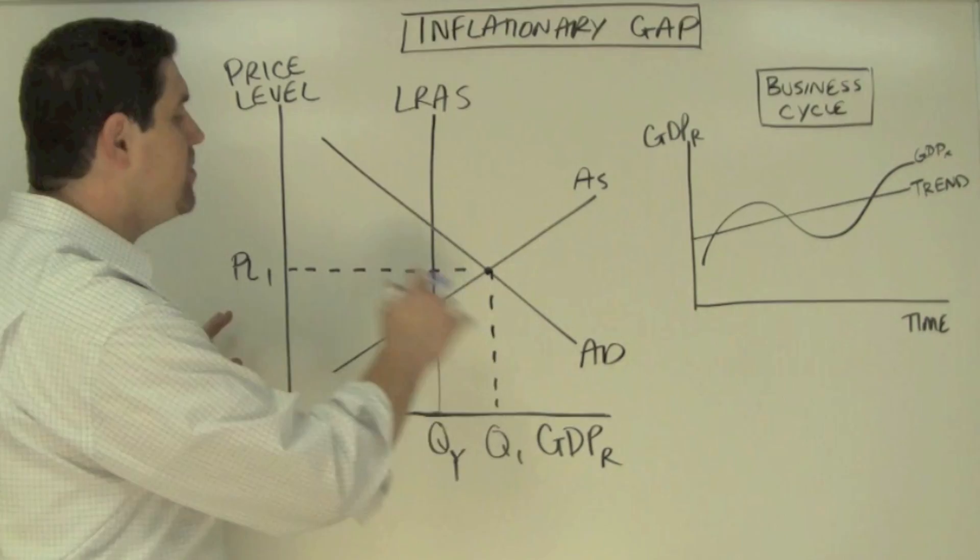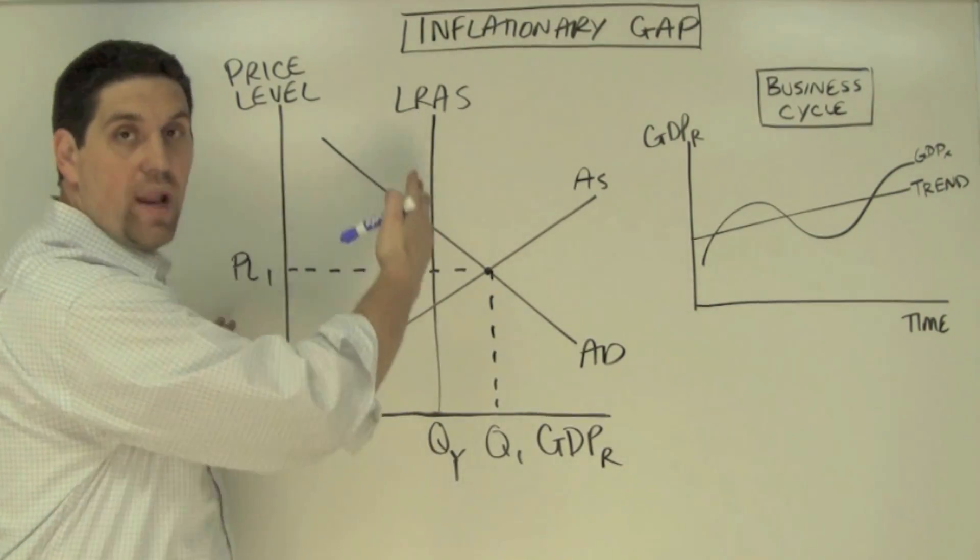Alright, in this question they give you the graph - aggregate demand, aggregate supply, and then they give them this long run aggregate supply curve as well.